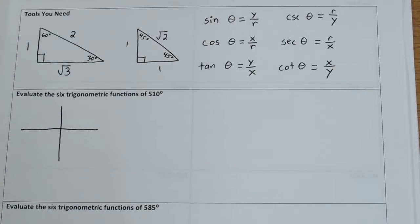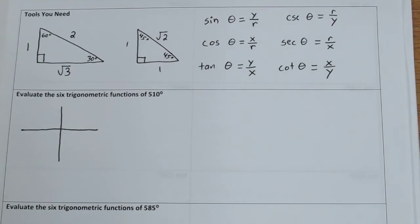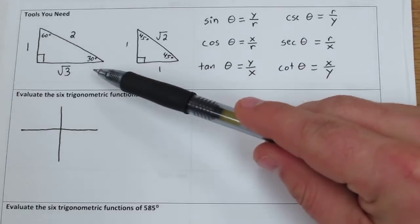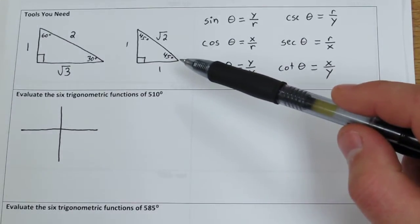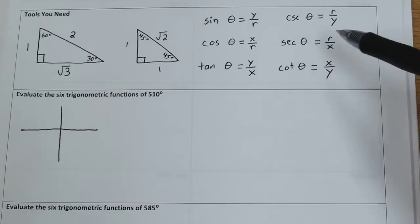This video will help you fill out the trigonometric chart you've been working on. In order to do the chart, there's some tools you need from the notes. You need the 30-60-90 triangle and the 45-45-90 triangle, and you also need the circle definitions for trigonometric functions.